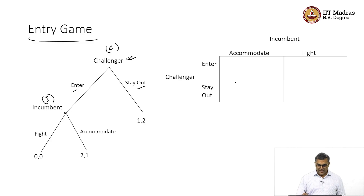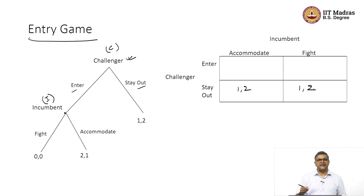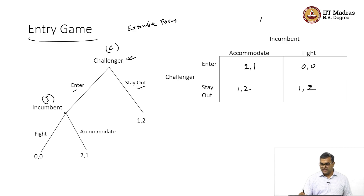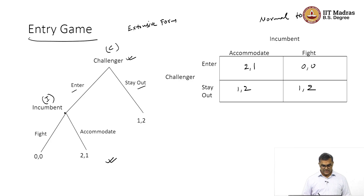Here we can obtain the equivalent normal form game. The payoffs are 1 comma 2 and 1 comma 2. These numbers are made up ordinal numbers. This is in extensive form and this is in the normal form. Using backward induction to solve this extensive form game, the challenger thinks the incumbent is rational, so between fight and accommodate, the incumbent will choose accommodate because accommodate gives 1 to the incumbent and fight gives 0.